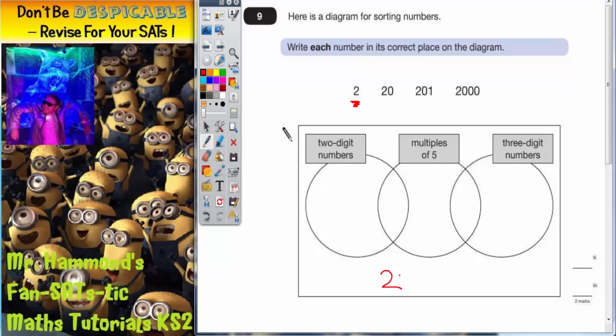So let's just pop it there. Right, the number 20. Does it have 2 digits? Yes it does. Is it a multiple of 5? Yes it is. Is it 3 digits? No it isn't.